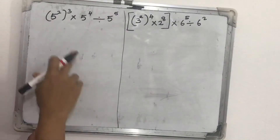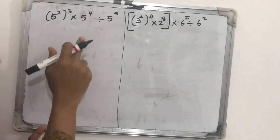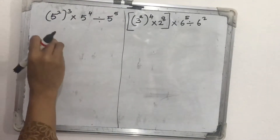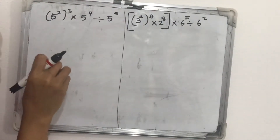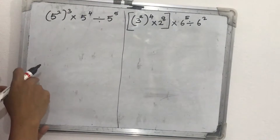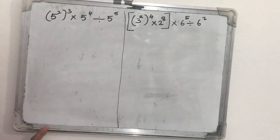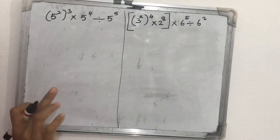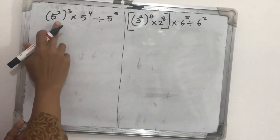The first question: five squared, whole cubed, into five raised to four, divided by five raised to five. When we get this type of question, first we check the bases. Here, the base is five — all the bases are five. So we can use the first law.